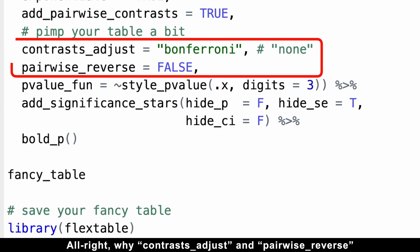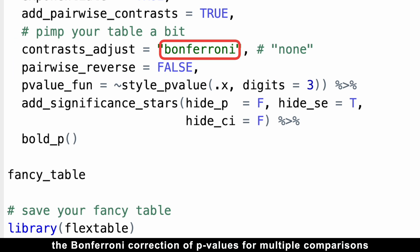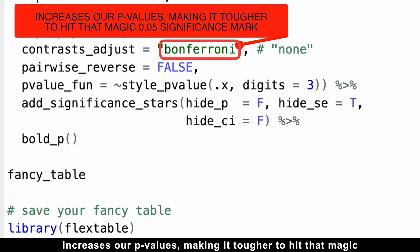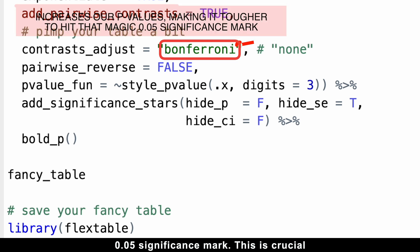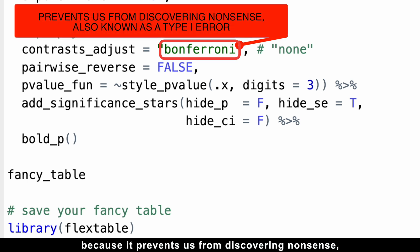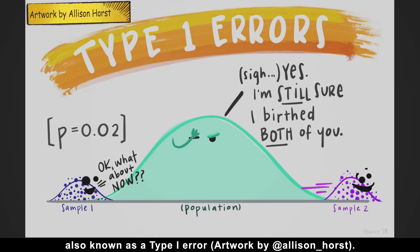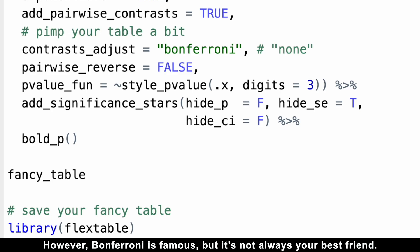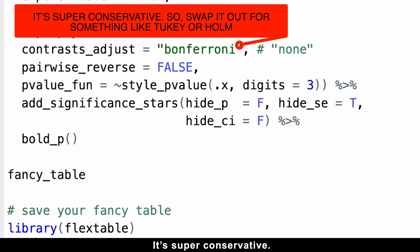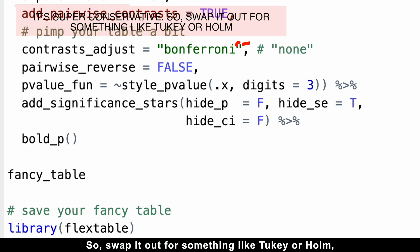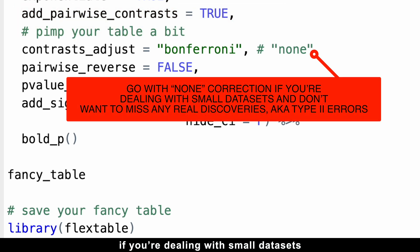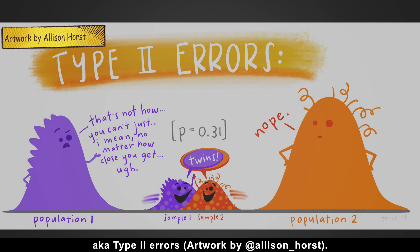Alright, why contrast_adjust and pairwise_reverse are total game changers. First, the Bonferroni correction of p-values for multiple comparisons increases our p-values, making it tougher to hit that magic 0.05 significance mark. This is crucial because it prevents us from discovering nonsense, also known as type 1 error. However, Bonferroni is famous, but it's not always your best friend. It's super conservative. So, swap it out for something like Tukey or Holm, or even go with no correction if you're dealing with small datasets and don't want to miss any real discoveries, aka type 2 errors.